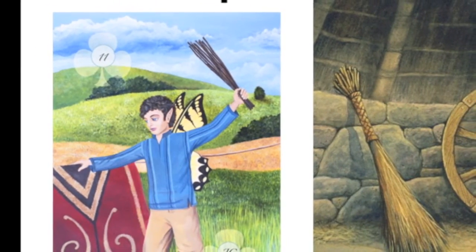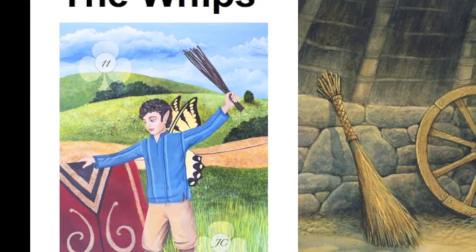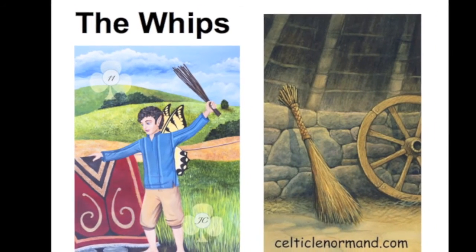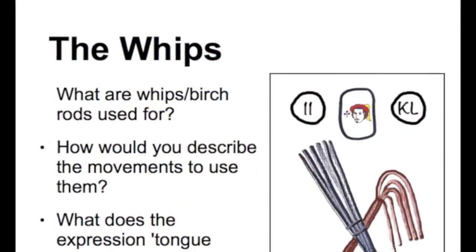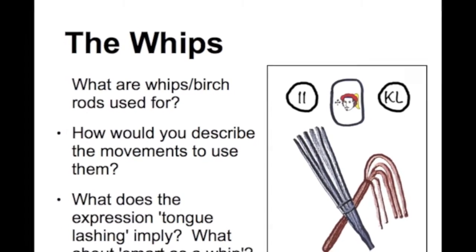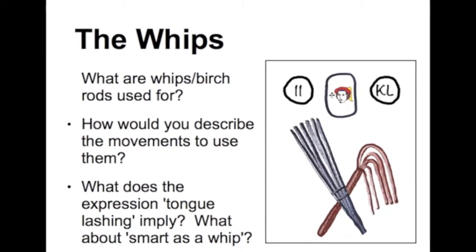Moving on to the whips card, sometimes called the birch rods, occasionally called the broom. In the Celtic Lenormand card we have birch rods which can be lifted up and wielded as a whip, and can also be taken downwards and used as a broom, so it combines both of those. The questions are: what are whips or birch rods used for? How would you describe the movements to use them? What does the expression 'tongue lashing' imply? And what about 'smart as a whip'? Whips or birch rods can be used to hit someone or something, and they can also be used to sweep things away. The hitting side is perhaps the one more commonly used in Lenormand readings, but it's good not to forget that secondary use.